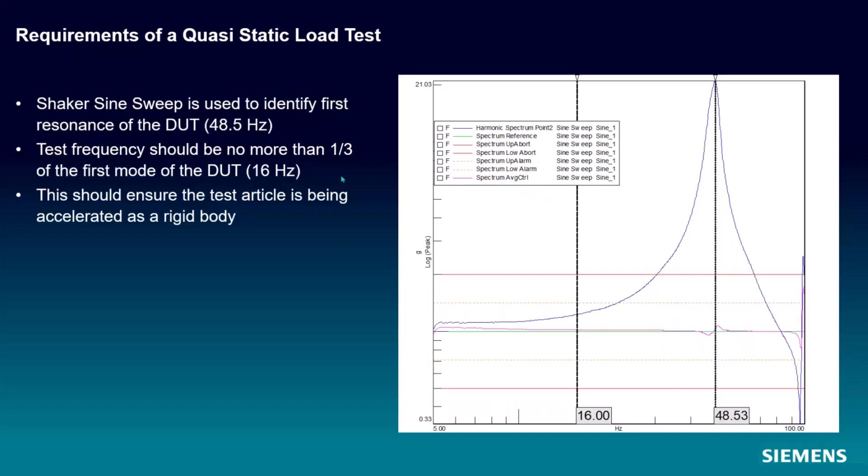And our test specifications, guidance out there from NASA and ESA and other space agencies in the world, is we don't want to have a frequency higher than one third of the first mode of the test article, DUT, device under test. In this case, we're at 16 hertz, is one third of this approximately. Now, why doesn't it look like this is one third away from this? Well, because I have log spacing. Rest assured that we're basically two-thirds of the way down from this maximum frequency at 16 hertz.